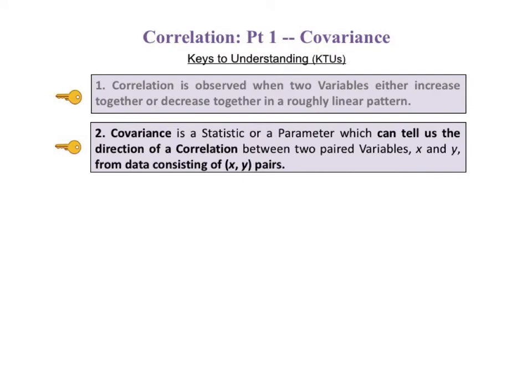The second KTU says covariance is a statistic or a parameter which can tell us the direction of a correlation between two paired variables, x and y, using data consisting of x, y pairs.